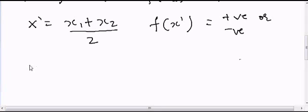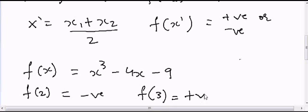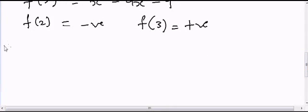Let me give you an example. If I have f(x) = x³ - 4x - 9, and I calculate f(2), that equals negative, and f(3) equals positive.